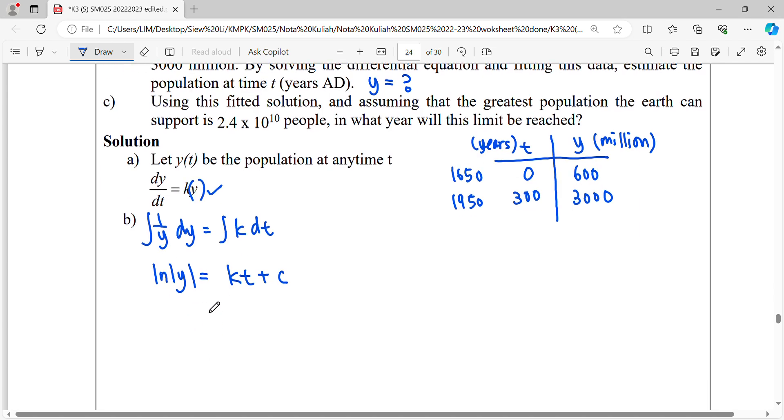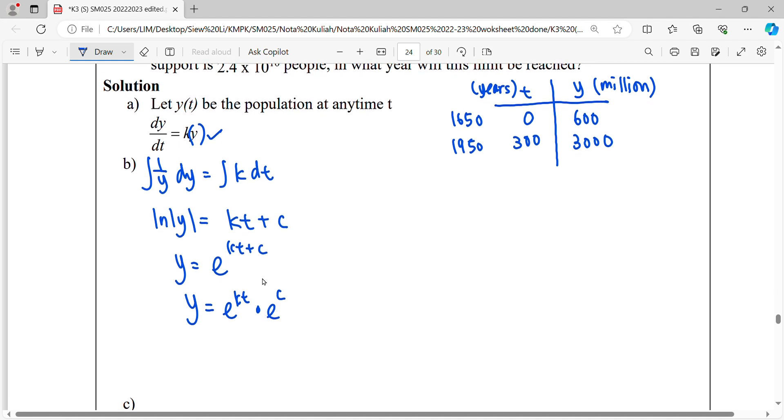We simplify until we get the general form. Unlock this ln, it will be base e, go to the right-hand side and this function becomes power. As we simplify e^(kt+c), this means multiplication for the same base e with power c. So from here, our general solution will be y equals Ae^(kt).